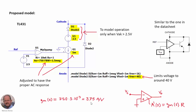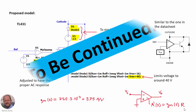This DC value represents the complete model's small-signal behavior, with gain A'' given by Gm times the resistance connected to the cathode.